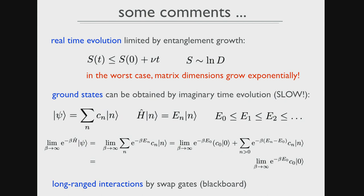You can also calculate ground states by imaginary time evolution: replace t by -i*tau and project down to the ground state, as all excited states are projected out. The nice thing is you get this for free from the time evolution code; the downside is it's comparatively slow compared to a real ground state search, and it has a tendency to get stuck in excited states for more complicated systems. If you just want to play around, I would encourage you to use imaginary time evolution to find ground states.